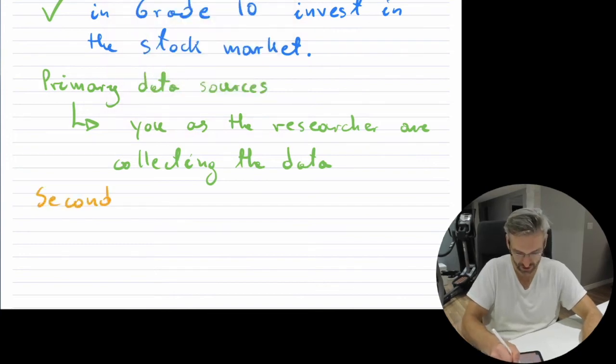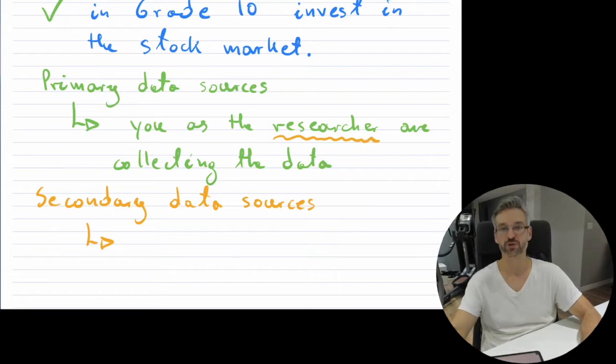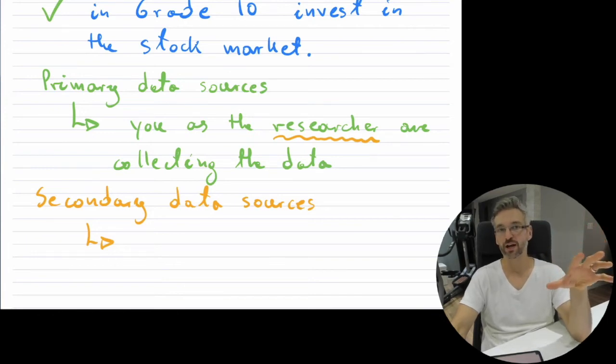There is also something called a secondary source, secondary data sources. Now what are secondary data sources? Well, it is not the researcher themselves who is doing that, they might be digging up information from somewhere else. For this particular example where you have grade 10s investing in the stock market or not, most likely you would have to go out and research that because you wouldn't be able to find it in secondary sources.